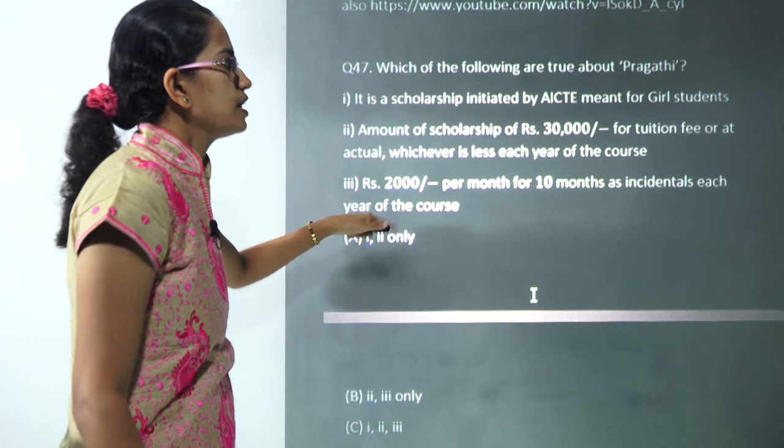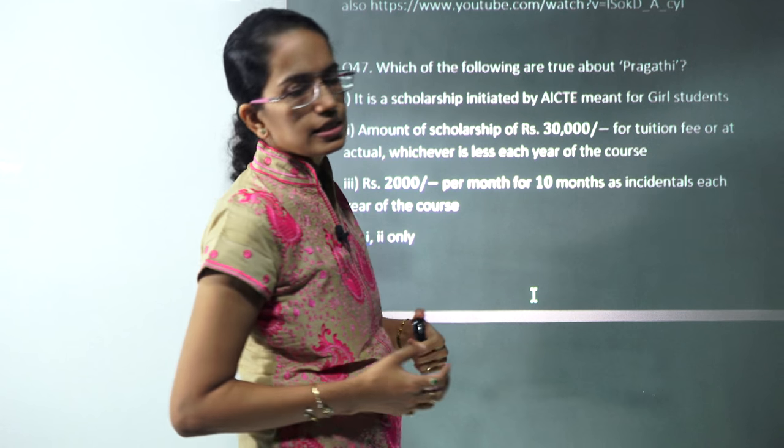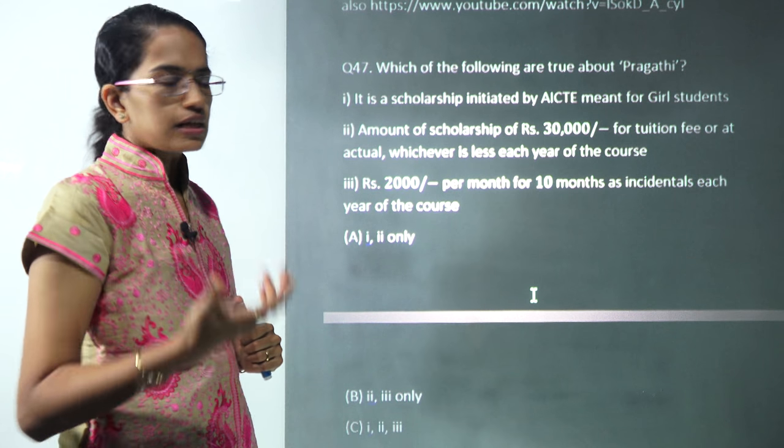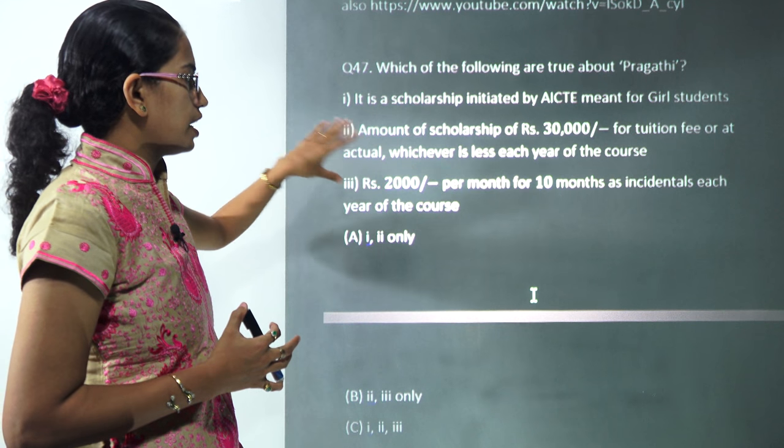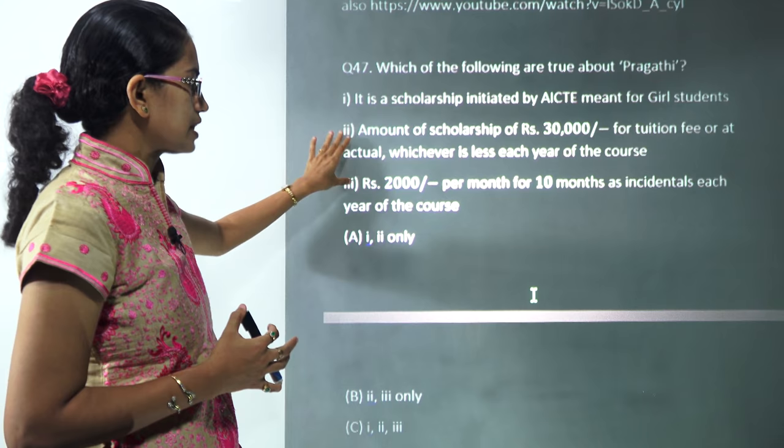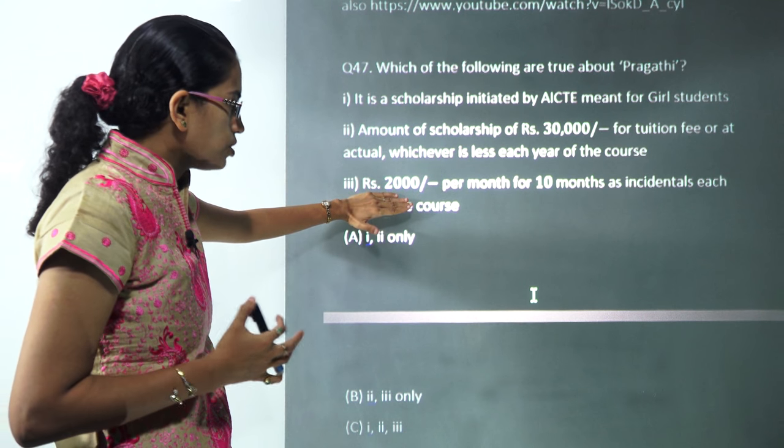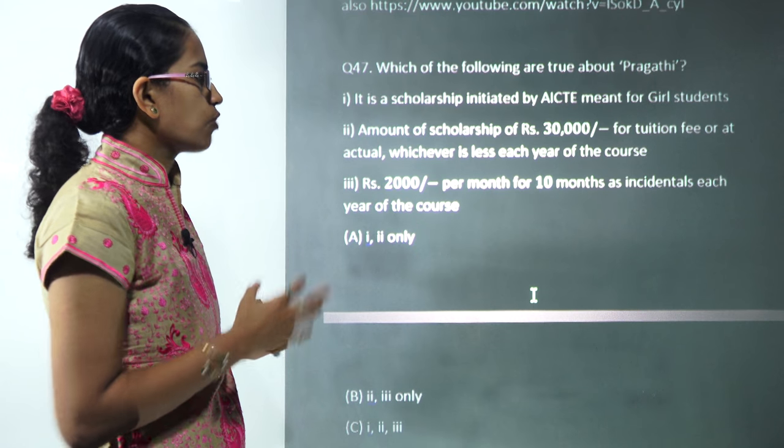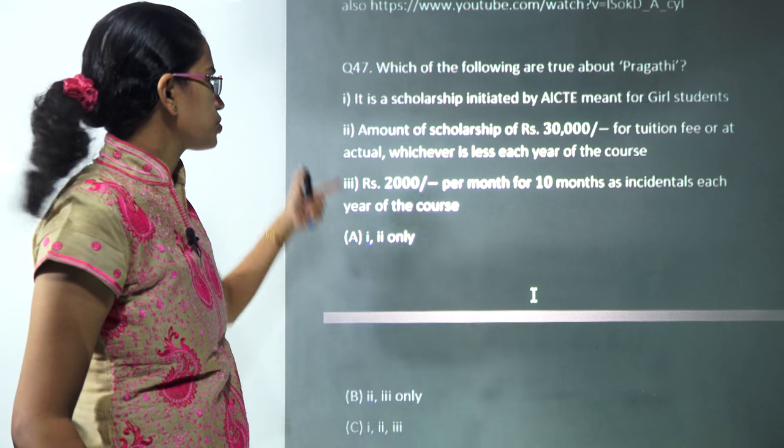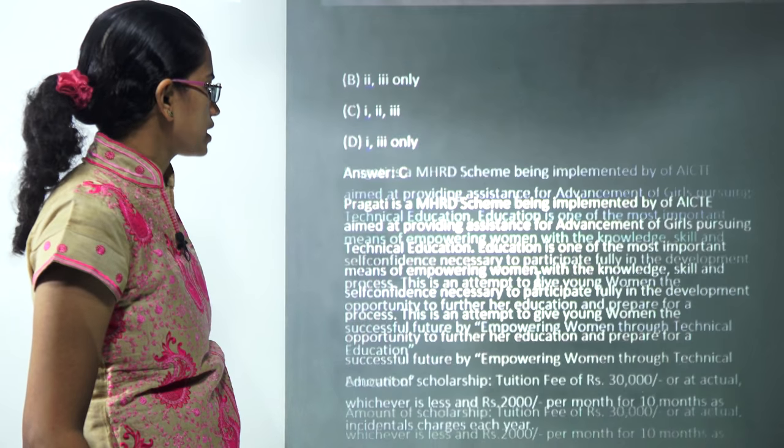This was a question on PRAGATI, that is a scheme by AICTE for advancement of girls in technical education. It talks about scholarship of 30,000 or actually whatever is less. It also talks about 2,000 per month for 10 months as incidentals for each year of the course. So you have all three statements which are correct here.